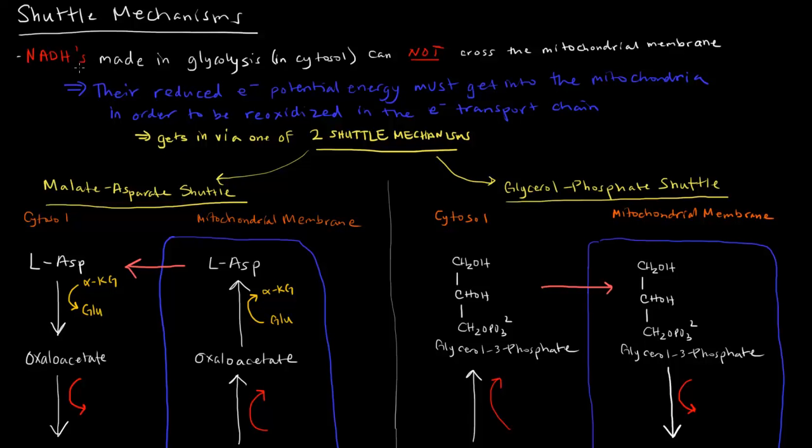So the NADHs made in glycolysis, which happens in the cytosol, they cannot cross the mitochondrial membrane. Their reduced electron potential energy needs to get into the mitochondria so that they can be re-oxidized by the electron transport chain to make ATP.